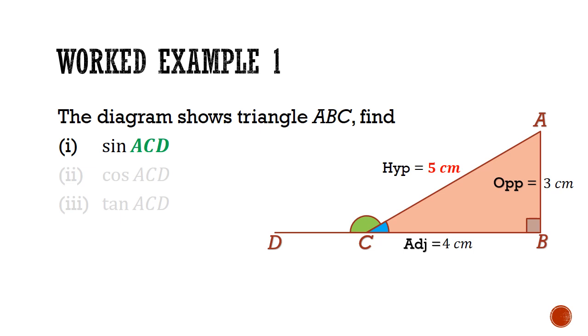Sine of the obtuse angle ACD is equals to sine of the acute angle ACB. And this will be opposite side 3 divided by hypotenuse 5, or 3 over 5.